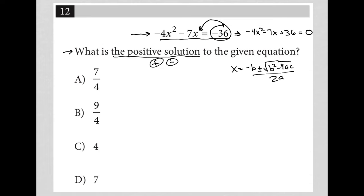So for us, our a value is here at negative 4, our b value is here at negative 7, and our c value is here at 36. Again, this is coming from ax squared plus bx plus c equals zero as our generic quadratic equation.